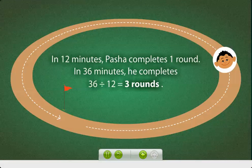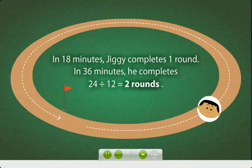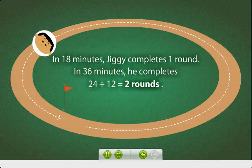That's because, in 36 minutes, Pasha would have completed 3 rounds. In 36 minutes, Jiggy would have completed 2 rounds. And both of them will meet at the starting point again.